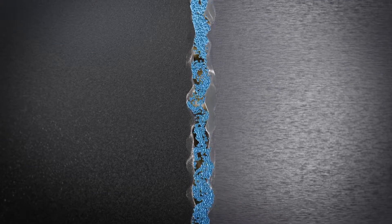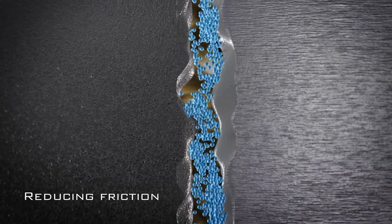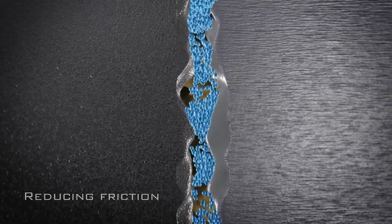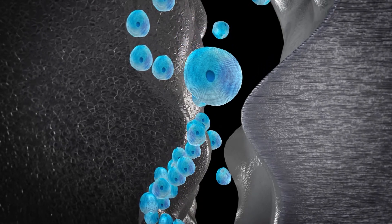As Nanolube's diesel engine oil lubricates the moving mechanical parts, the WS2 fullerene-like nanospheres function as tiny ball bearings, reducing the friction between contacting metal surfaces, creating a powerful anti-friction effect.